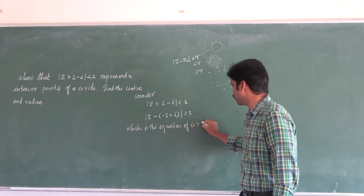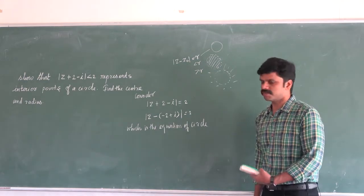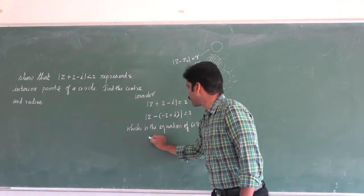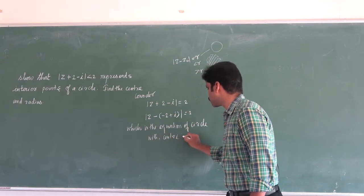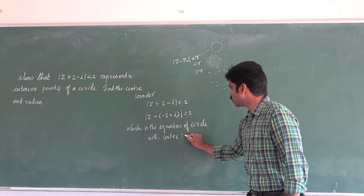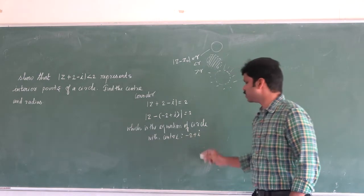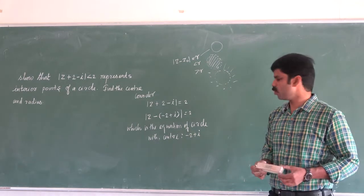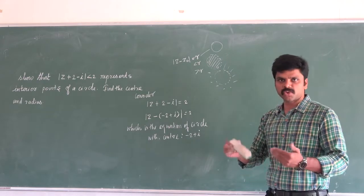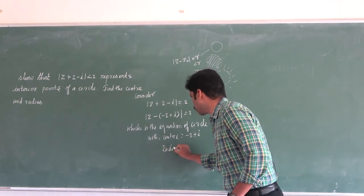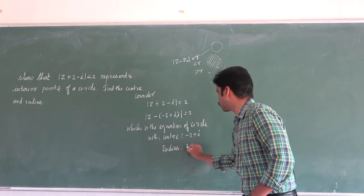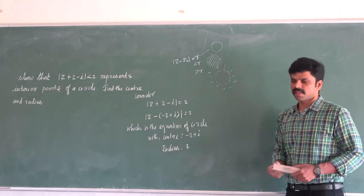Which is the equation of circle. This is the equation of circle with center. What is the center of this circle? Center minus 2 plus i is the center. Or you can denote it as minus 2 comma 1. And radius, what is the radius of this circle? Radius of this circle is 2.